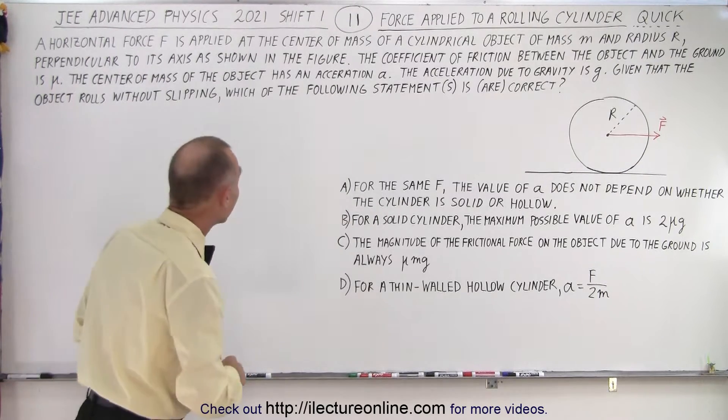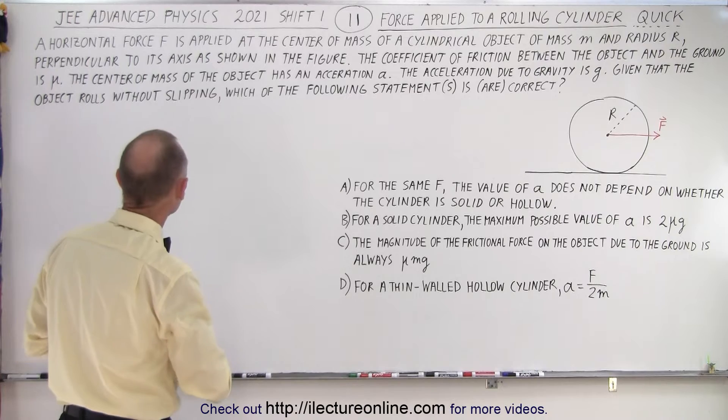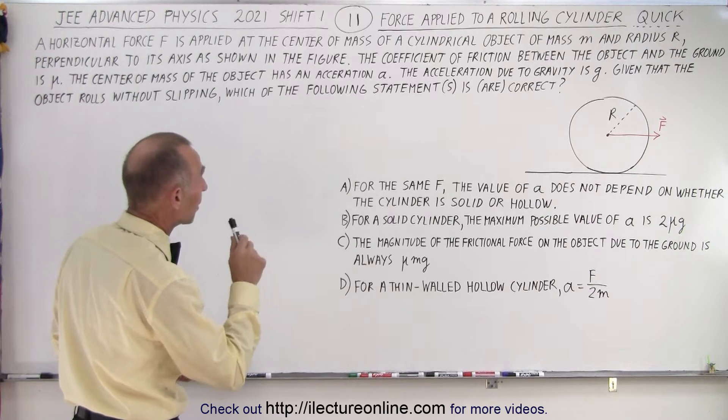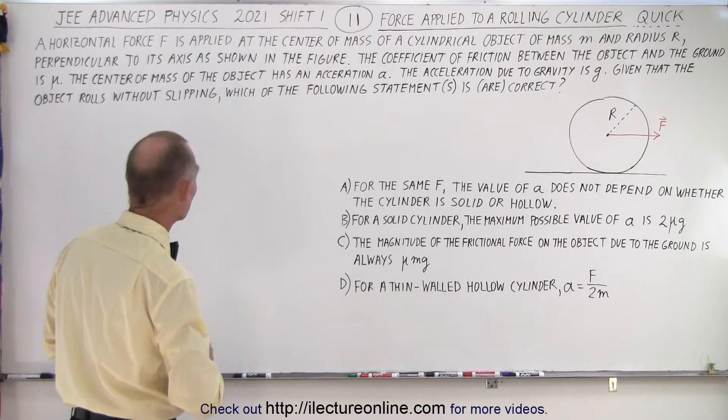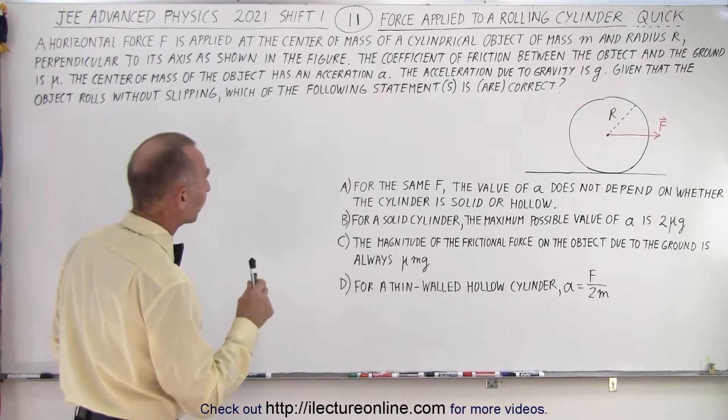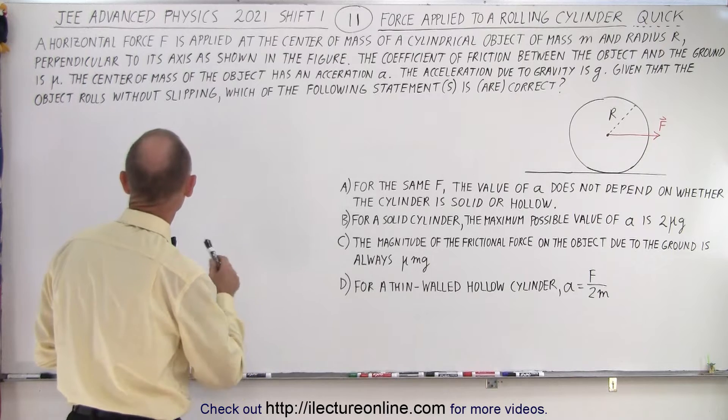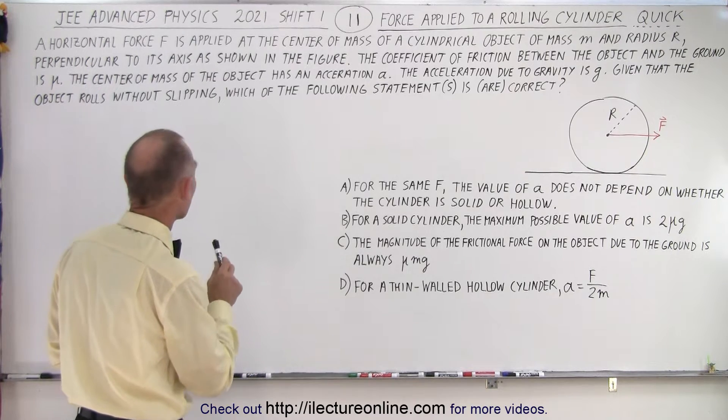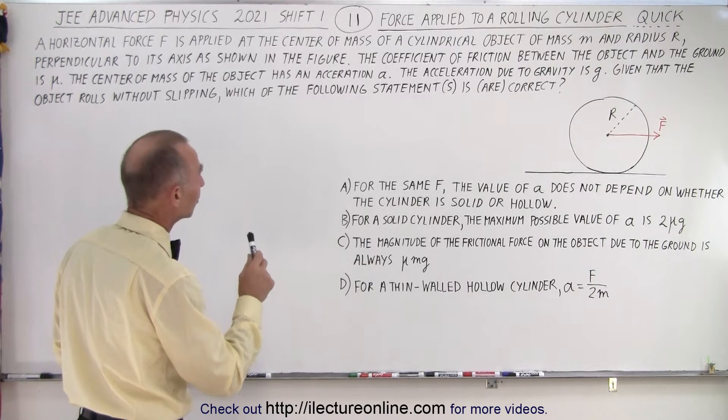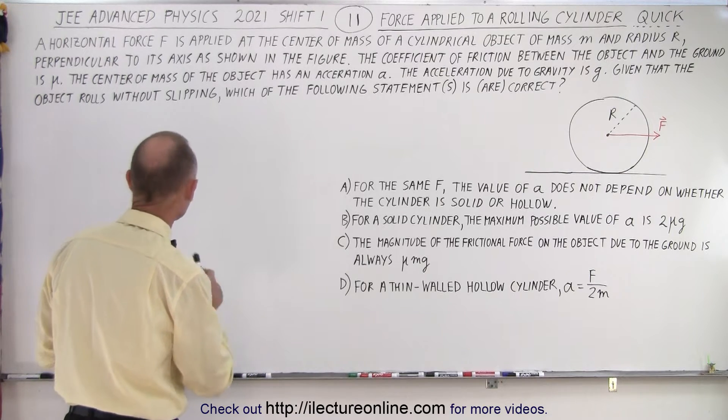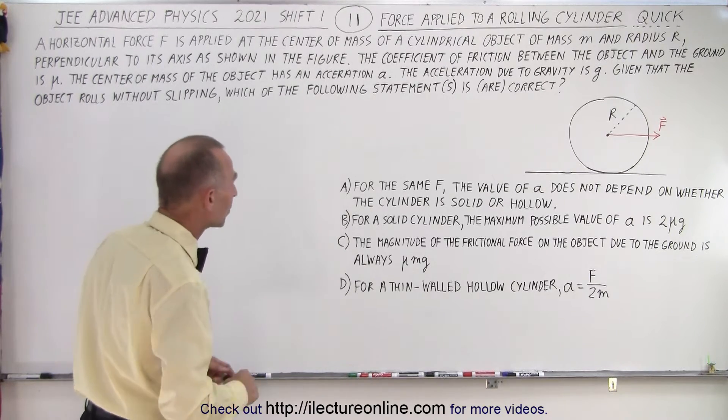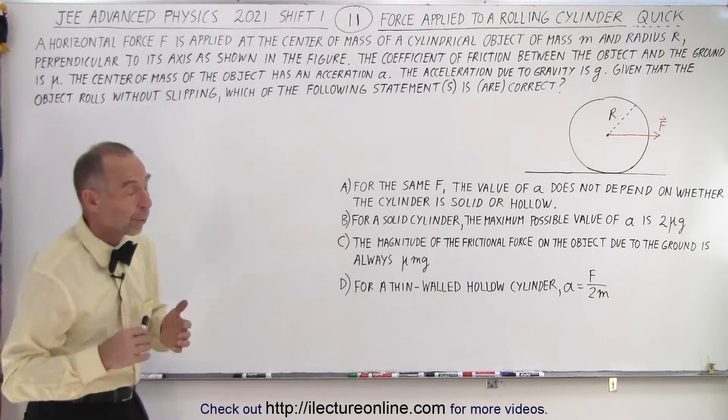Let's read it first. It says a horizontal force f is applied at the center of mass of a cylindrical object of mass m and radius r perpendicular to its axis as shown in the figure. The coefficient of friction between the object and the ground is μ. The center mass of the object has an acceleration a, the acceleration due to gravity is g, and given that the object rolls without slipping which of the following statements are correct?